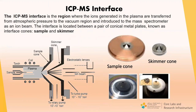The ICP-MS interface is the region where ions generated in the plasma are transferred from atmospheric pressure to the vacuum region and introduced to the mass spectrometer as an ion beam. The interface is located between a pair of conical metal plates known as interface cones — the sampler and skimmer. These cones are responsible for the intensity and stability of the analytical signal. If there are damages to the cone holes or a buildup of deposits on the cones, the intensity and stability of the signal will decrease, and it is necessary to clean or replace the cones.